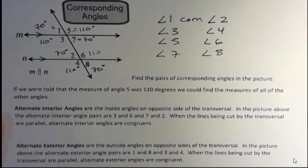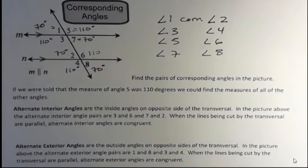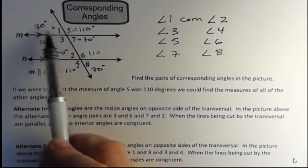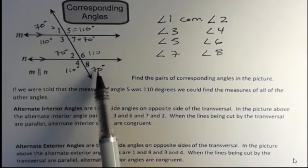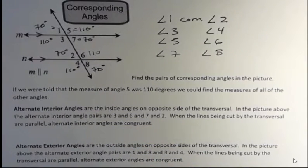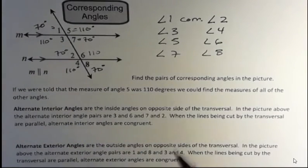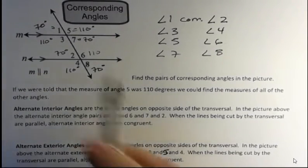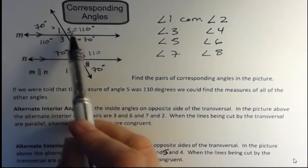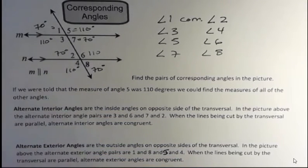Alternate exterior angles are the outside angles on opposite sides of the transversal — so we're looking on the outside of the picture on opposite sides of the transversal. Angle one and angle eight are alternate exterior angles; you can see those are both 70. And then five and four: five is on the exterior to the right of the transversal, and four is on the outside to the left of the transversal, so they're on opposite sides and both equal 110.